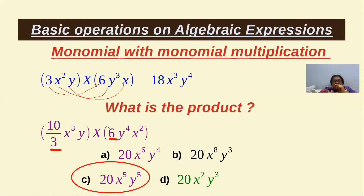These two terms cancel. 2 × 10 = 20. There are 3 x's here and 2 x's there, giving a total of 5 x's. There is 1 y here and 4 y's there, so total 5 y's. This is the correct answer.